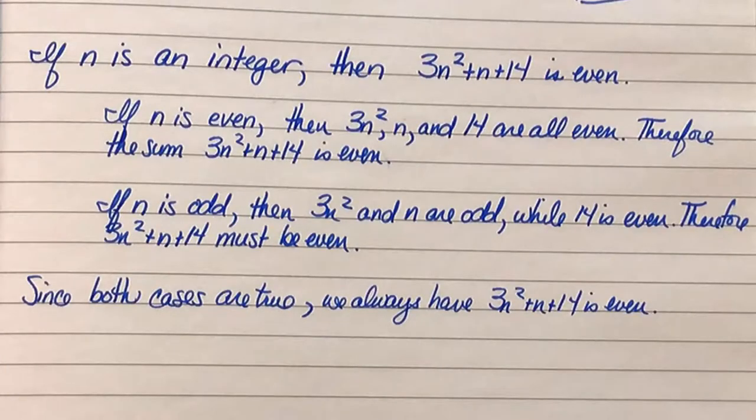Here's an example of a simple theorem involving integers, which I want to reframe in the language of conditionals and conditional statements. The claim is, if n is an integer, then 3n squared plus n plus 14 is even.